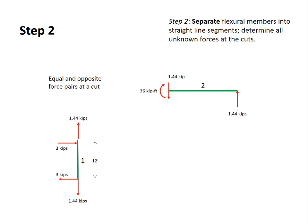Now the moment. The clockwise moment of 36 kip feet on member 2 becomes a counterclockwise moment of 36 kip feet on member 1. The vertical force is a shear force on member 2 but it's an axial force on member 1. That's because the orientation of the members are different.